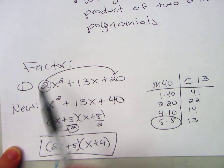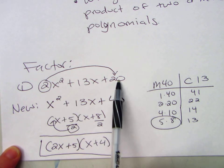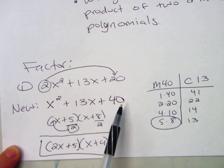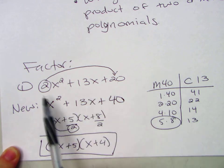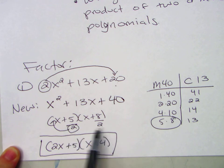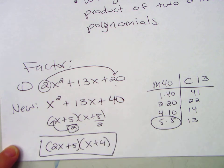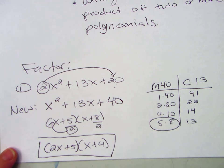So first, remember, we slid this 2 to the other side, to the end. We factored something similar. It was not our actual trinomial, though. And then because we multiply by 2, we have to divide by 2. The one that does not divide, it slides to the front. Okay? Let's try another one.